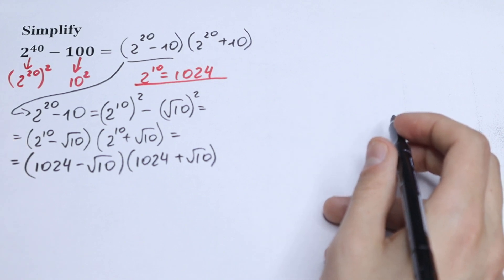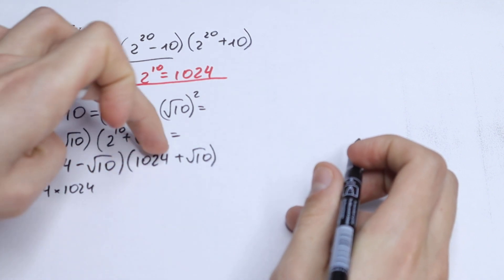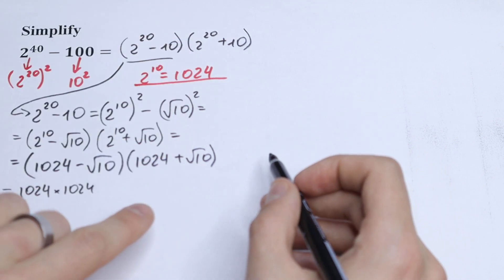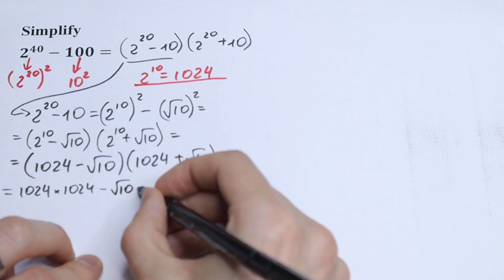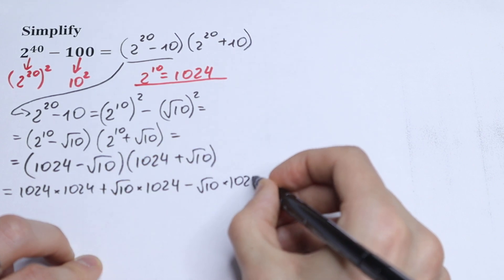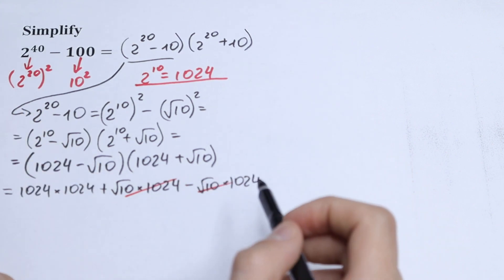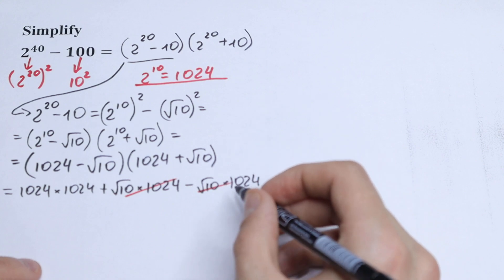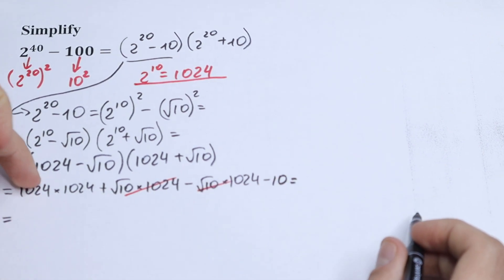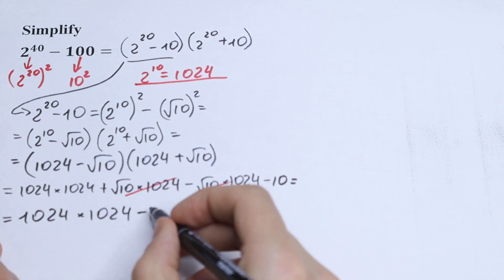We now have (1024 minus square root of 10) times (1024 plus square root of 10). Multiplying these out: 1024 times 1024, plus and minus (square root of 10 times 1024) which cancel each other, and we're left with 1024 squared minus 10. This is a direct application of the difference of squares formula.